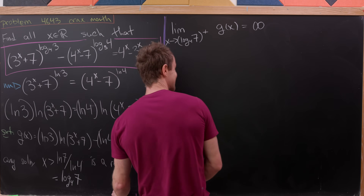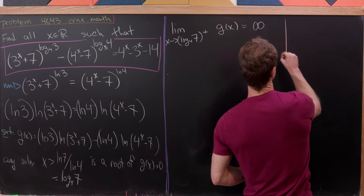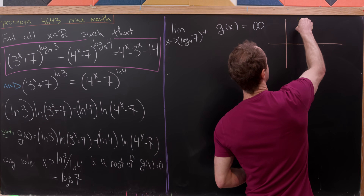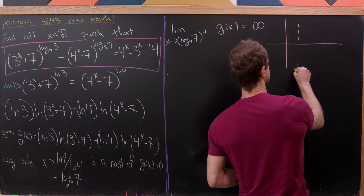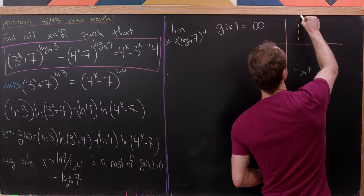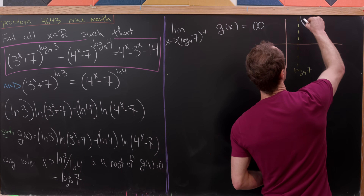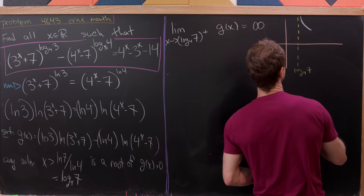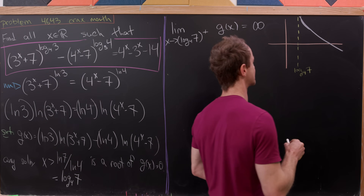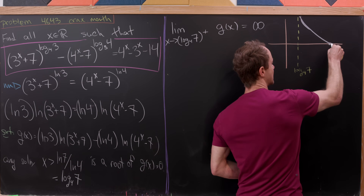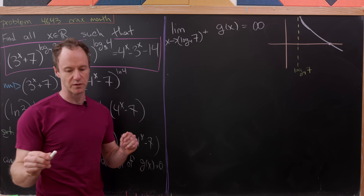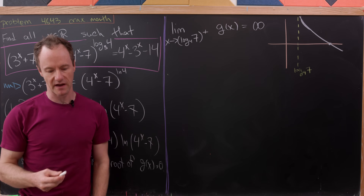We can start to sketch g(x). There's a vertical asymptote at log base 4 of 7, and our function comes down from positive infinity near that asymptote. Any solution will be where it crosses the x-axis. I've drawn this as a strictly decreasing one-to-one function, which we'll prove shortly.